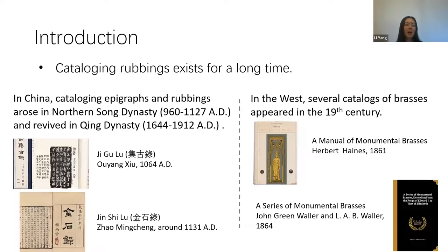Cataloguing rubbings has existed for a long time in China; cataloguing epic rocks and rubbings arose in the Northern Song Dynasty and revived in the Qing Dynasty. The earliest known Chinese rubbings catalogs are Ji Gu Lu and Jin Shi Lu. In the West, several catalogs of brasses appeared in the 19th century — for example, A Manual of Monumental Brasses and A Series of Monumental Brasses are very famous catalogs of brass rubbings.